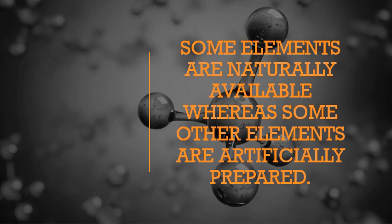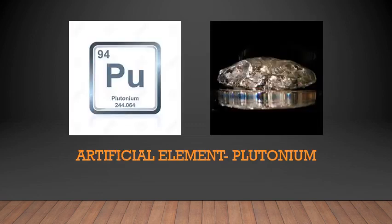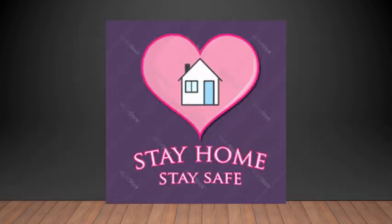Some elements are naturally available whereas some are artificially prepared. For example, gold is a naturally available element — its symbol is Au. Plutonium is an artificial element that is artificially prepared. Elements are also classified as metals and non-metals, which you will learn about properly in higher classes.